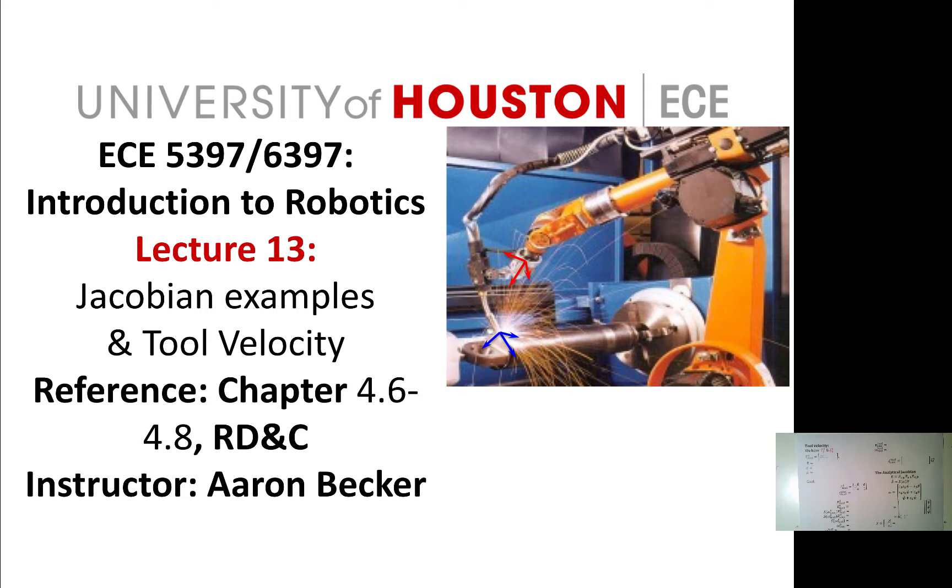But what happens when we go to the store and buy some sort of end effector, something that we bolt on to the end of the robot? This is an example of a welder tip, and that tip is no longer at the end effector, there's an offset there. How can we talk about how fast that end effector, the tip of my end effector, is moving?